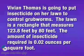Vivian Thomas is going to put insecticide on her lawn to control grub worms. The lawn is a rectangle that measures 123.8 feet by 80 feet. The amount of insecticide required is 0.02 ounces per square foot.